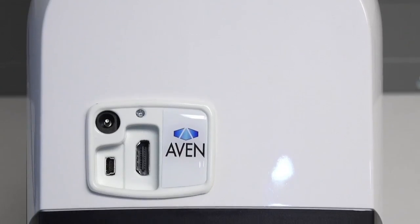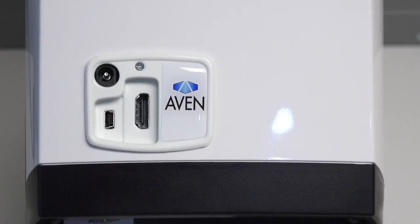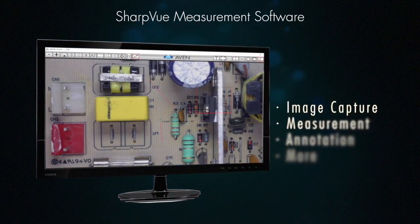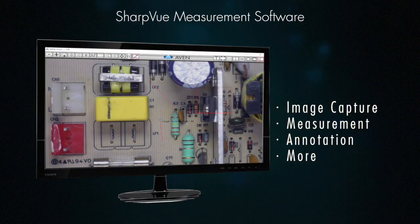The SharpView features a USB output, allowing for computer connectivity. The included software offers capabilities including image capture, measurement, annotation, and more.